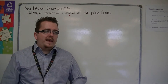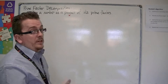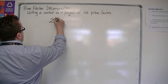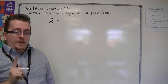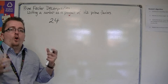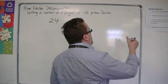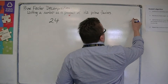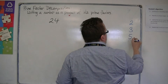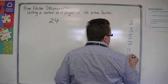Let's look at the number 24. The first thing to do is to remind ourselves of prime numbers — what the prime numbers are. So it goes 2, 3, 5, 7, 11, etc.